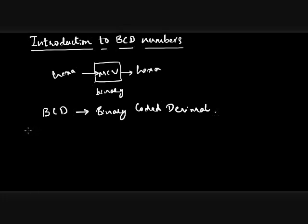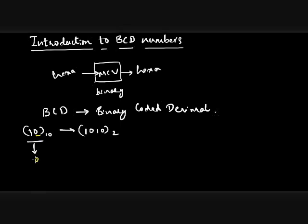Let us take an example and see how it is done. Take 10 in decimal and say I want to represent it in Binary Coded Decimal. First we represent it in binary — the binary equivalent of 10 is 1010. Now to represent this in BCD, I'll take each individual digit: I take 0 and represent it in binary using four digits — 0000. Then I take 1 and represent it in binary using four digits — 0001. This is the BCD equivalent of 10.